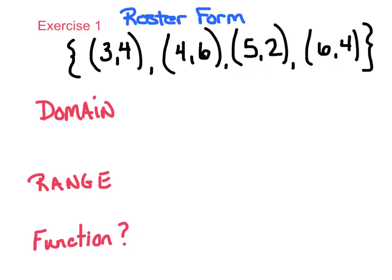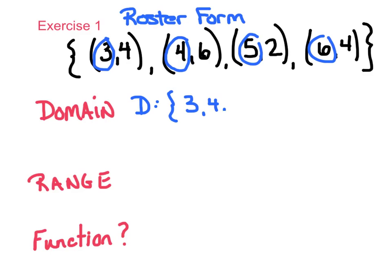Domain — remember — are our x values. So I'm just going to go through and list out my x values in roster form. My domain is {3, 4, 5, and 6}.